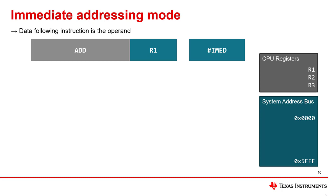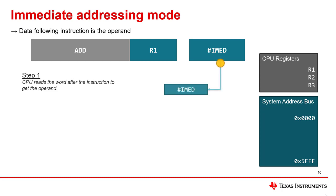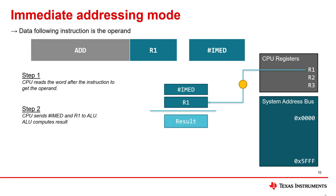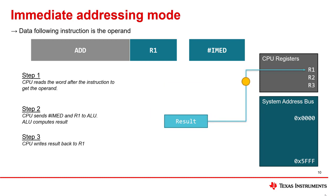Another type of addressing mode is called the immediate addressing mode. In this addressing mode, the operand itself is part of the instruction. In most cases, the immediate operand data will be in the data word directly after the instruction. If the operand for a particular instruction never changes, you may be able to hard code it using the immediate addressing mode. As an example, let's see how an add works with this addressing mode. The CPU reads the word after the instruction — we'll call it IMMED for short. Next, the CPU sends IMMED and R1 to the ALU which computes the result. Finally, the CPU writes the result back to R1.